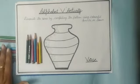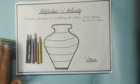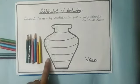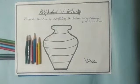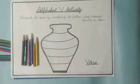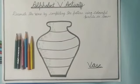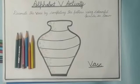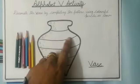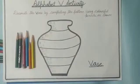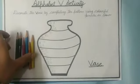We have some colorful pencils and with these pencils we will decorate the vase. We have a pattern drawn in this vase. You have the same pattern in your vase — decorate the vase. So kids, take the pencil.